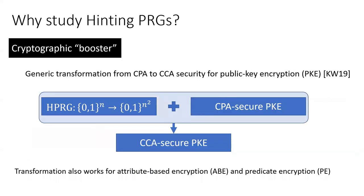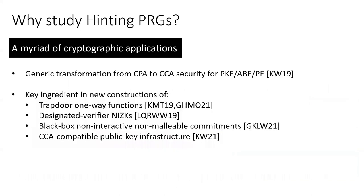Hinting PRGs have been used as a cryptographic booster to transform CPA-secure public key encryption and other advanced forms of encryption into their CCA-secure counterparts. In recent years, hinting PRGs have found a myriad of applications in other advanced cryptographic primitives, which makes them very interesting to study.